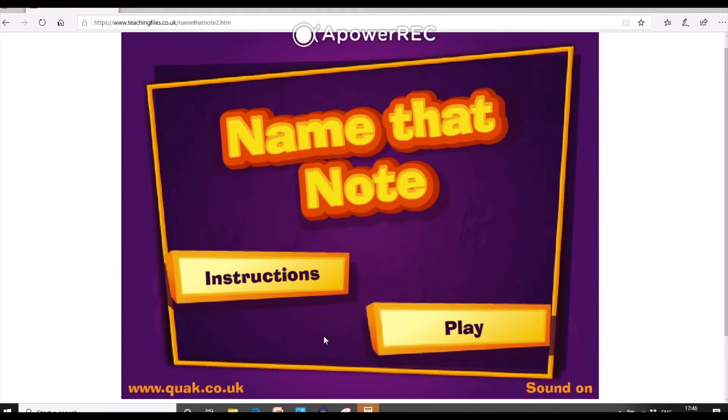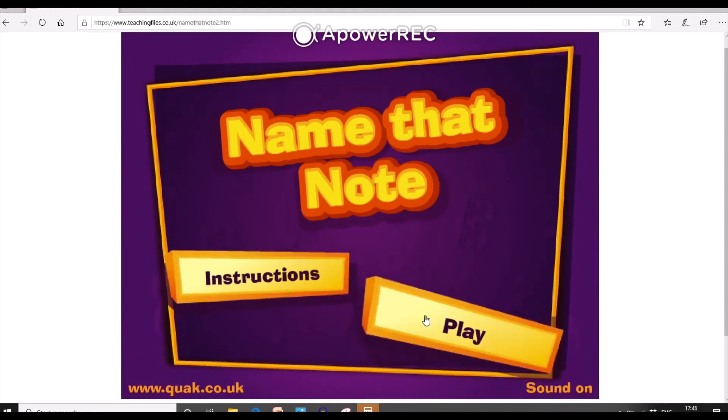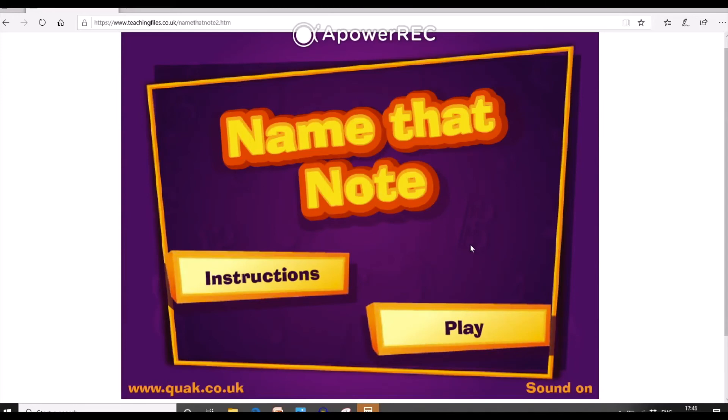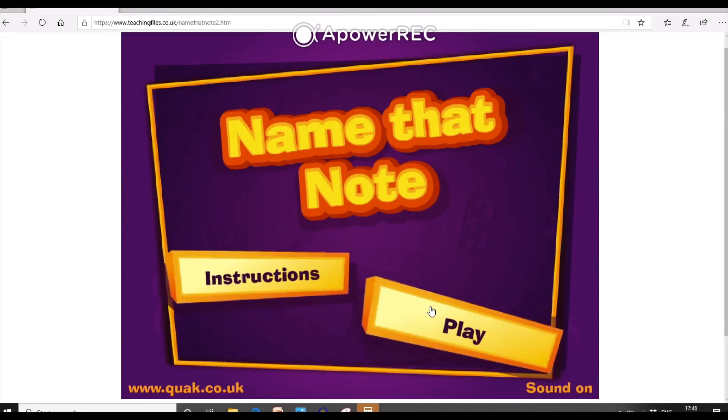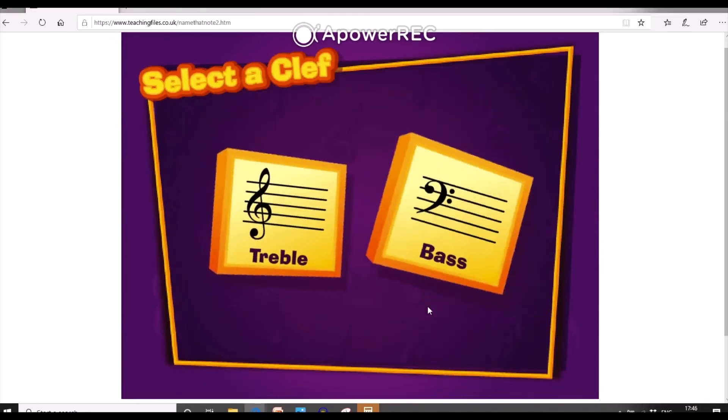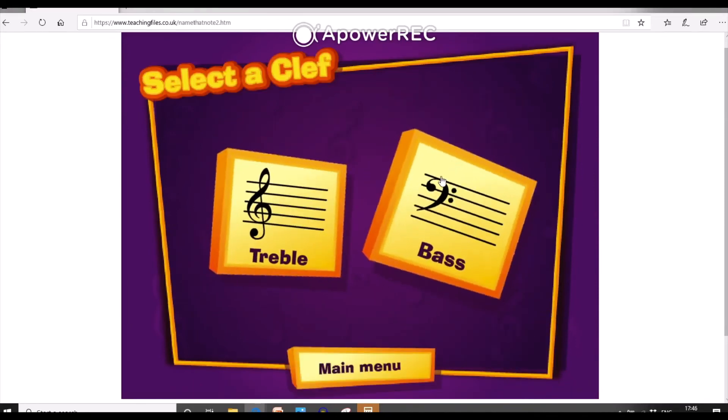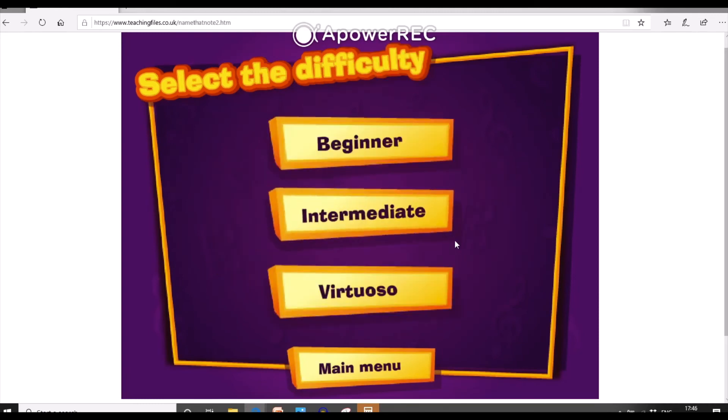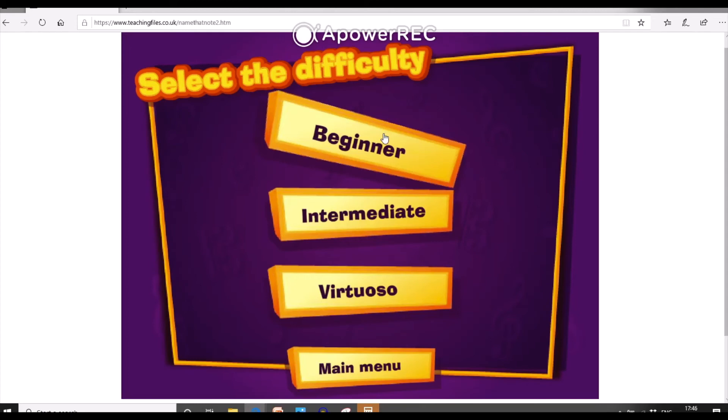On this first page you have two options: you have Instructions and Play. I'm going to show you how to play the game now, but if you get stuck later, you can always come back to this page and check the instructions for yourself. So we click Play, we're practicing our bass clef notes, so we click Bass Clef, and we are Beginners. As soon as I click this Beginner button, the game will begin.